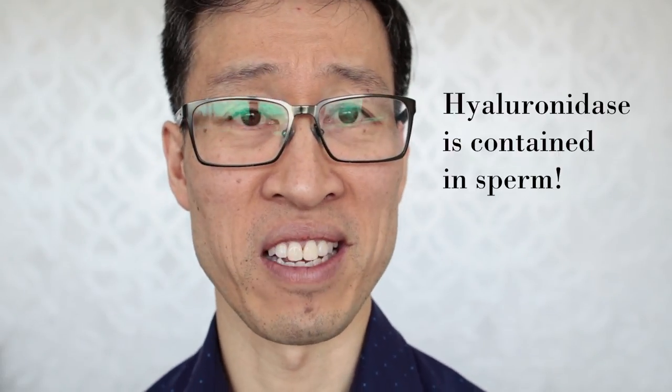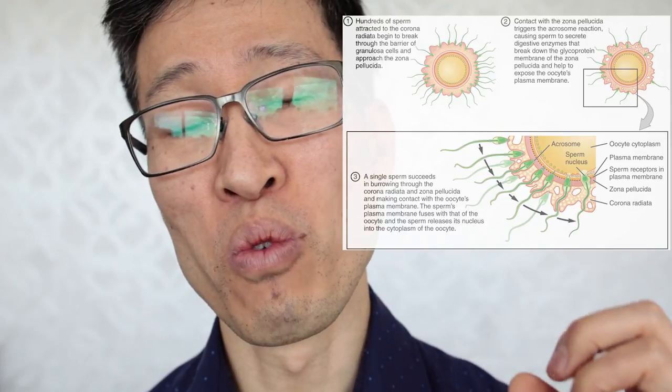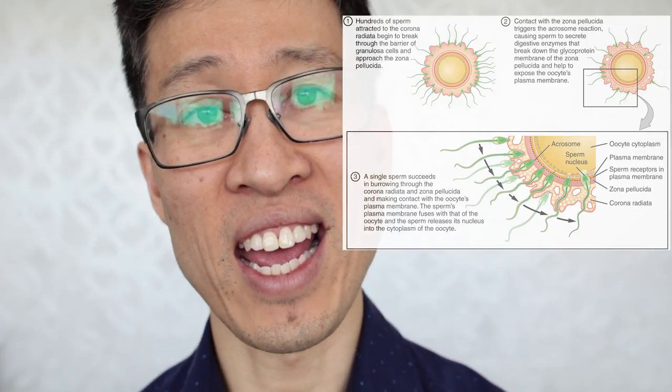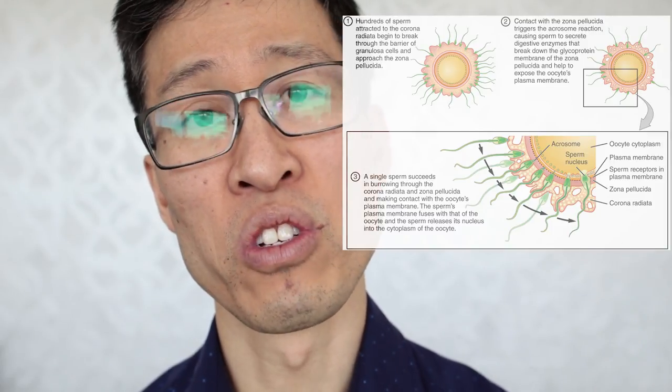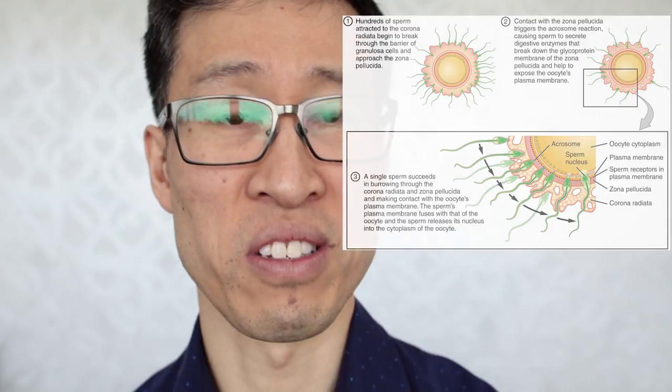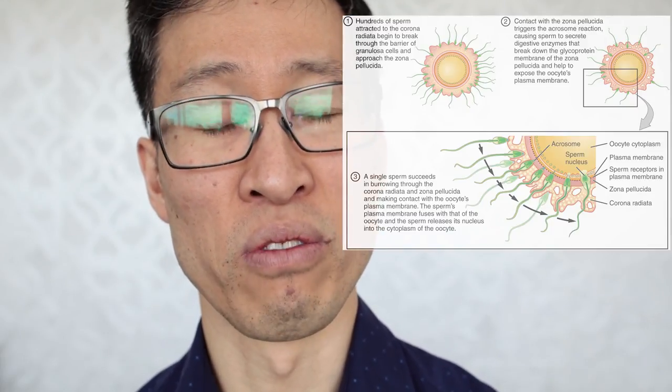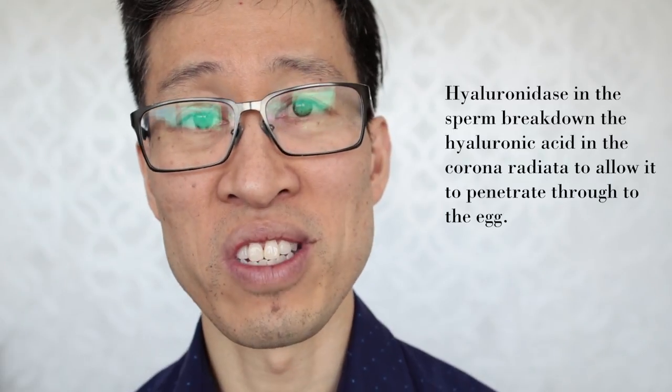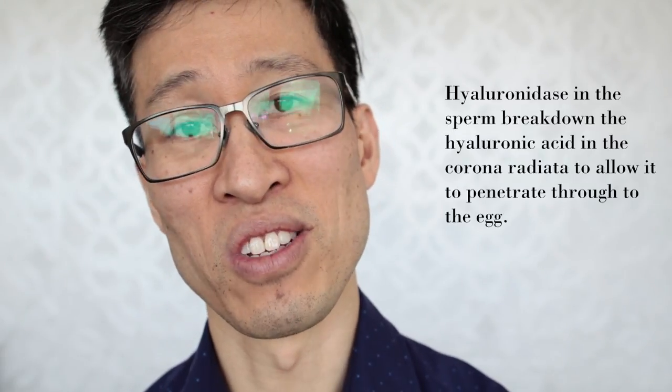Interestingly, sperm also has a lot of hyaluronidase - when it needs to get to the egg, it uses hyaluronidase to break down the corona radiata, which is the surrounding layer of the egg, before it can fertilize it. So testicular tissue has a high amount of hyaluronidase, and this is where most commercially available hyaluronidases are derived from - the testicular tissue of sheep or cows.